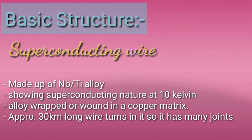Copper matrix mein wound kiya jata hai aur insulated aluminum mein placed kiya jata hai jo bore of the tube hai. Yeh wire 30 km long tak hoti hai. Because of coiling, this isn't possible to make in one piece, so it has many interconnecting joints. Itni lambi taar possible nahi hoti, isliye ismein kafi interconnecting joints hote hain — yahi hai superconducting wire.